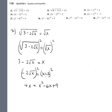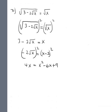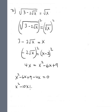Putting in standard form: x squared minus 6x plus 9 minus 4x equals 0, which gives x squared minus 10x plus 9 equals 0.